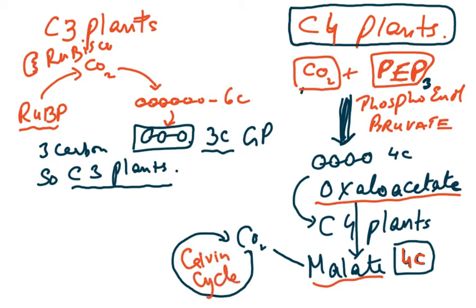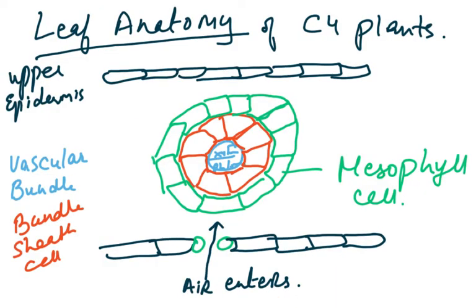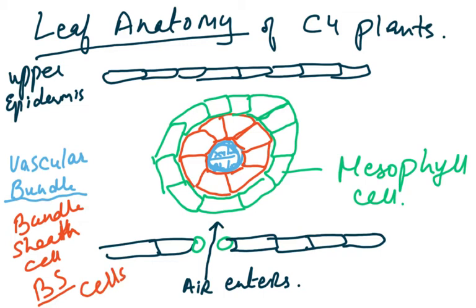Now I've given you the difference between C3 and C4 plants. But the leaf anatomy of C4 plants is very different from the normal C3 plant anatomy. The upper epidermis and lower epidermis are present. Inside there is a vascular bundle — xylem and phloem. Around the xylem and phloem are bundle sheath cells, which I've drawn in red — abbreviated as BS cells. And surrounding those are the mesophyll cells, drawn in green.